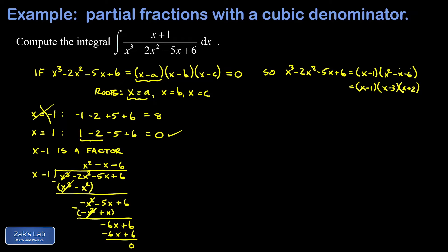So this denominator has factored into three linear factors. And we can rewrite the integrand as x plus one divided by x minus one times x minus three times x plus two. And the partial fractions decomposition here is a over the first factor x minus one plus b over the second factor x minus three plus c over the third factor x plus two.